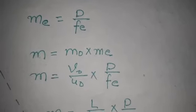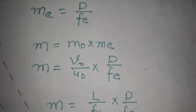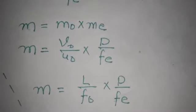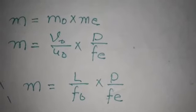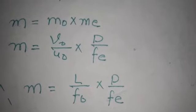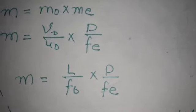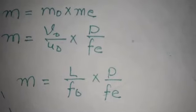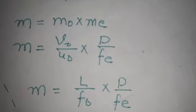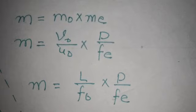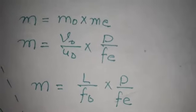Case 2: when the final image is at infinity. The magnifying power of the eyepiece is me = D / fe, and the magnifying power of the objective is m₀ = v₀ / u₀, where v₀ is approximately equal to the tube length L. So the total magnifying power is M = (L / f₀) × (D / fe). This is the final equation for magnifying power when the image is at infinity. This is a very important derivation. I hope you understand it well — if you have any doubts, please ask. Thank you.